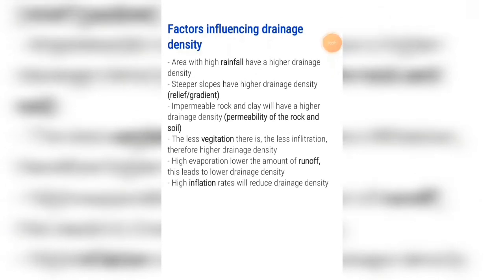Areas with high rainfall have a higher drainage density because the ground is already saturated. Steeper slopes have a higher drainage density because there is less time for the water to infiltrate. Impermeable rock and clay will have a higher drainage density because they do not allow the water to infiltrate.